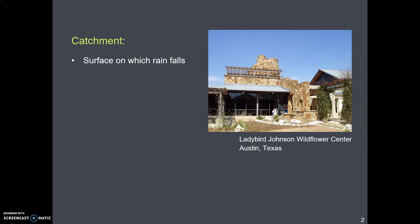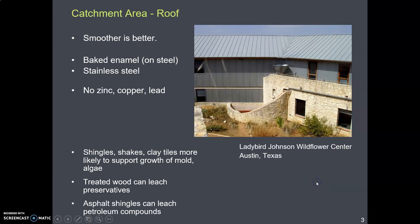Catchment means the surface on which the rain falls. Here you see a roof that looks like a standing seam metal roof with enamel on it — that's ideal for rainwater. A smooth surface is better. We don't really want asphalt shingles for several reasons: one, they're not smooth; two, they can support the growth of mold, algae, and microorganisms; and three, they can leak petroleum compounds.